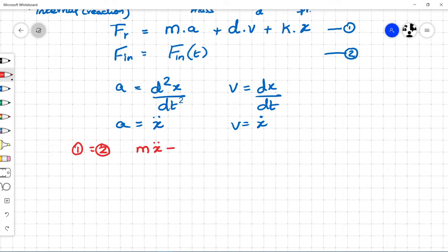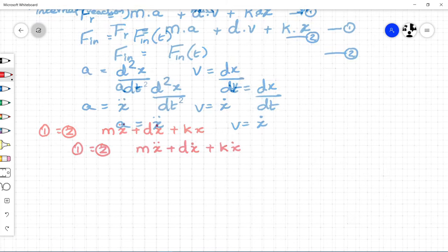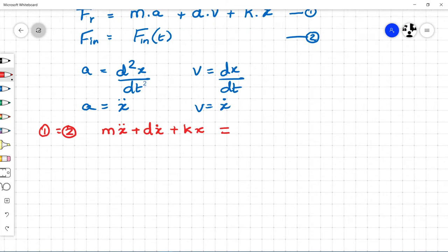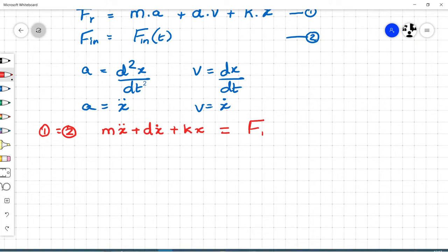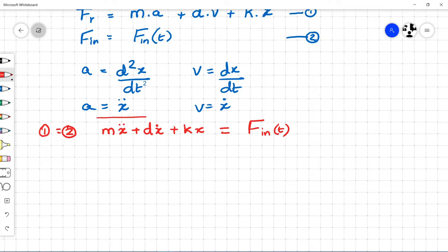In equilibrium, 1 equals 2, which is m·ẍ + d·ẋ + k·x = Fin. This is the equation of motion for spring mass damper system.